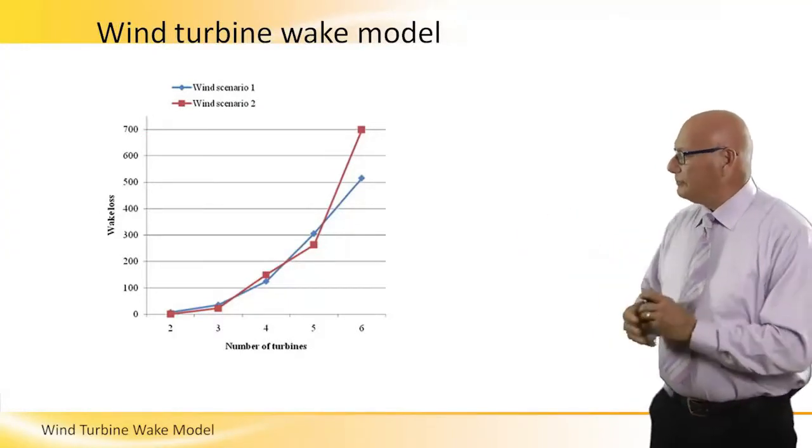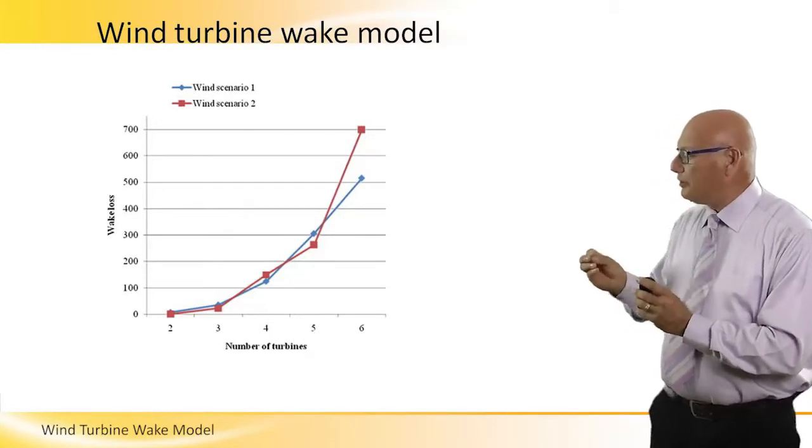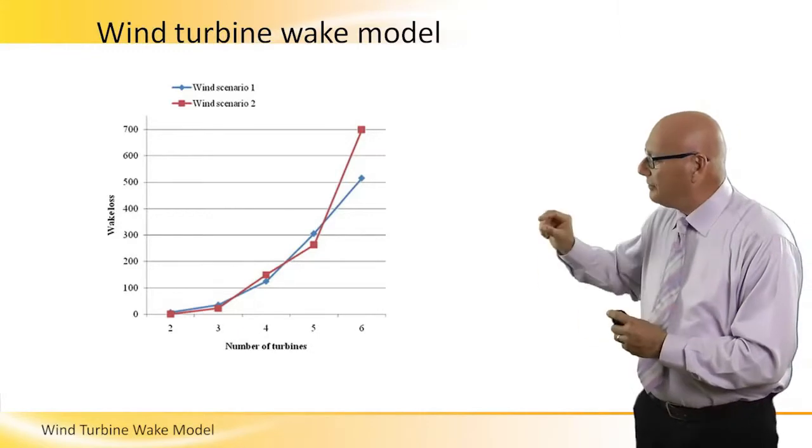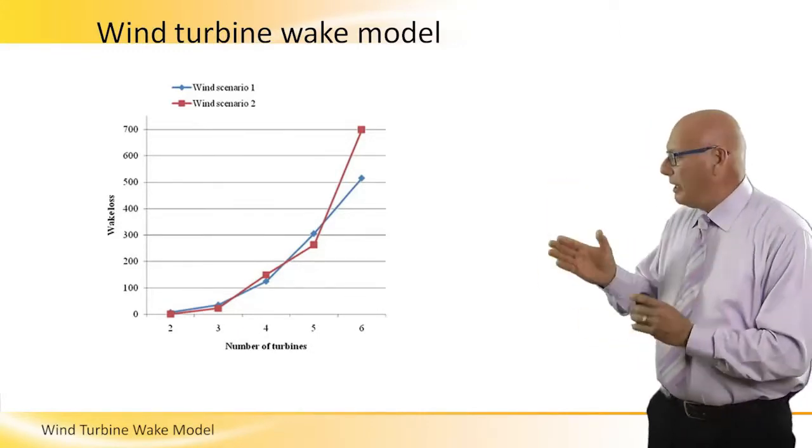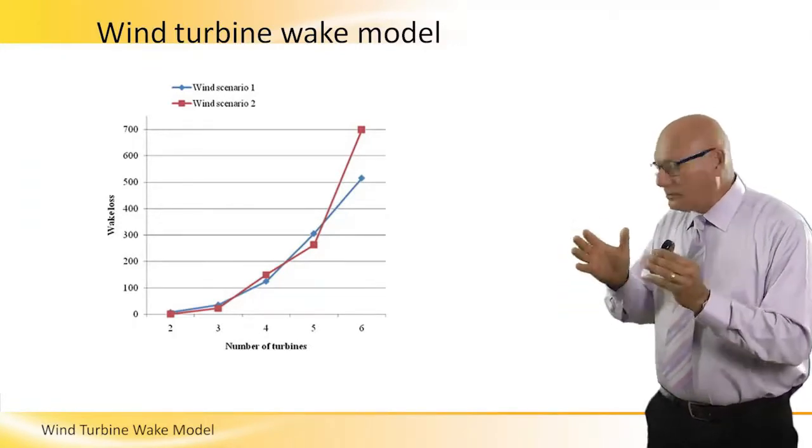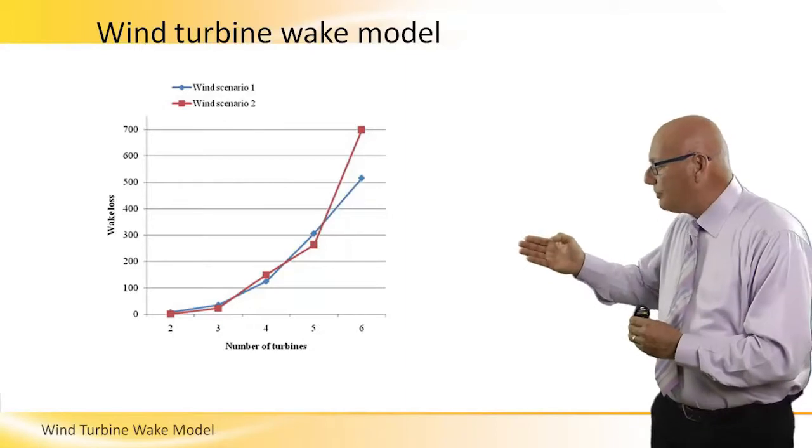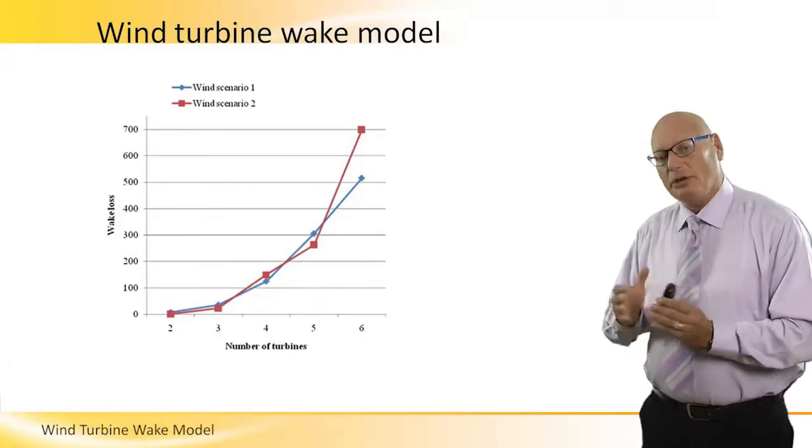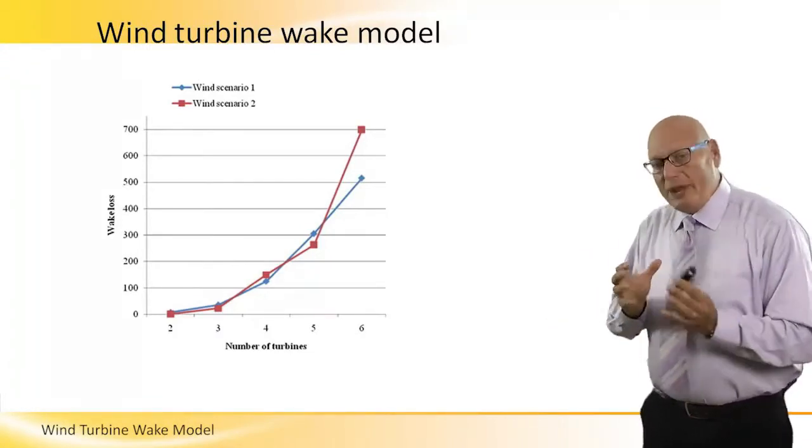And in this graph we see the relationship between the number of turbines in a park and the wakes in meters. And as a general statement, the more turbines we have, the bigger distance we need between one turbine and another. But wind is something which is almost random.